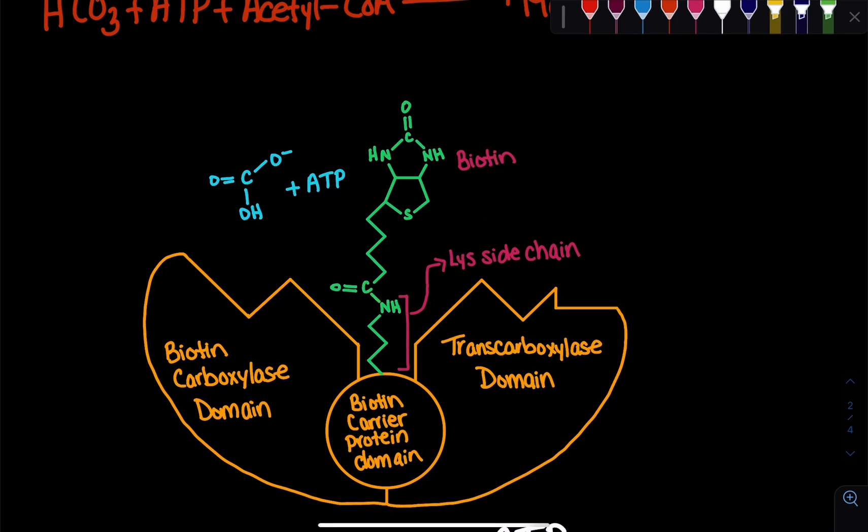Now biotin is actually going to act as a flexible arm, which is going to move our carbon dioxide from one domain to another domain. At the first domain, we're going to undergo this reaction in which bicarbonate is going to utilize the terminal phosphate on ATP to form carbon dioxide. Essentially what happens is that this bicarbonate, this negative charge on this oxygen, is going to nucleophilically attack the terminal phosphate on ATP.